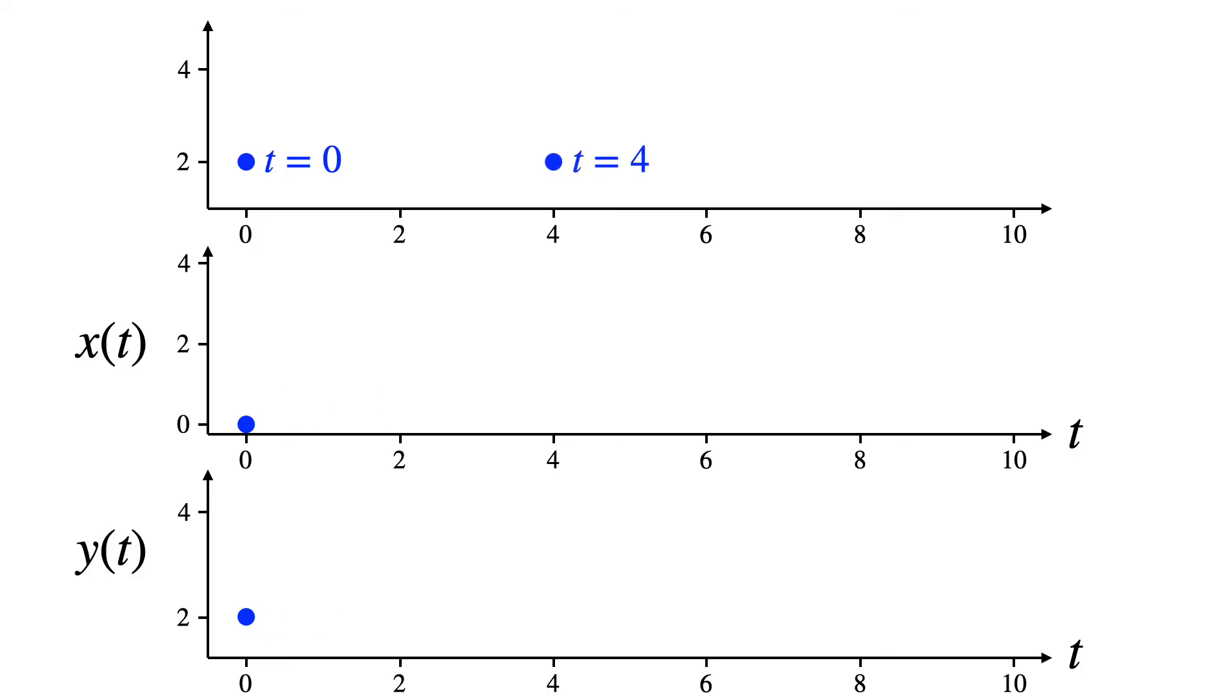Now the second control point is at T equals 4, and it defines control points for the X and Y splines in the same way. And similarly for T equals 6, and T equals 10 control points.